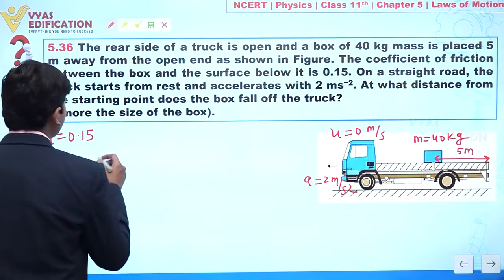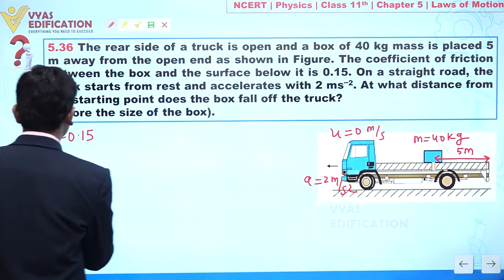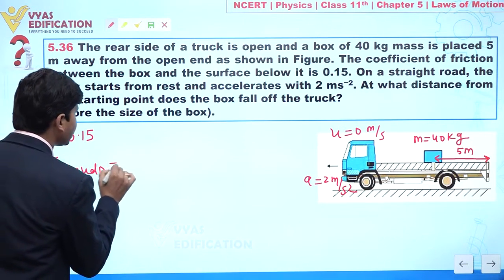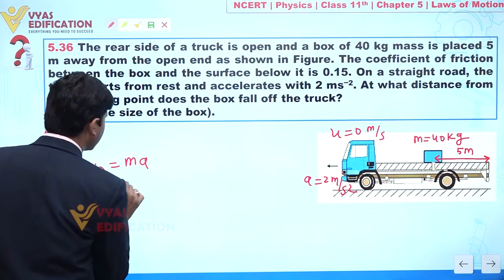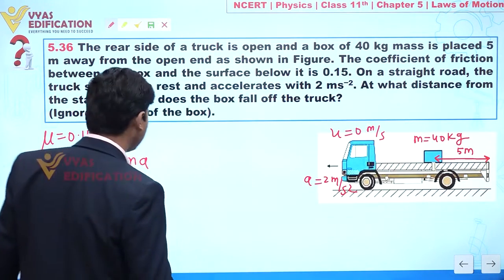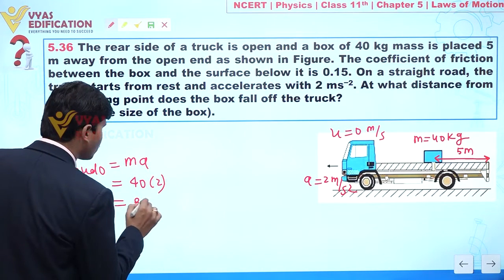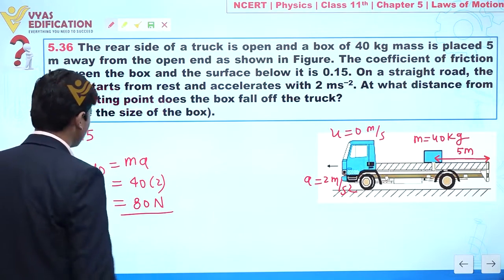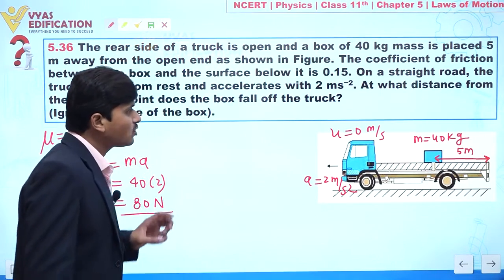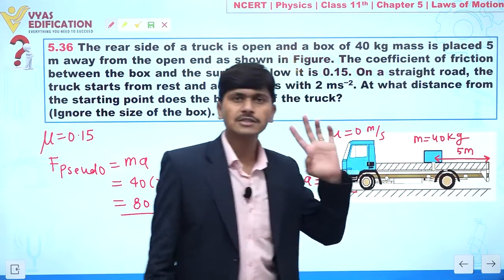First, we calculate the pseudo force acting on the box. Pseudo force is given by mass times acceleration. Mass of the block is 40 kg and acceleration is 2 m/s², so pseudo force = 40 × 2 = 80 Newtons.